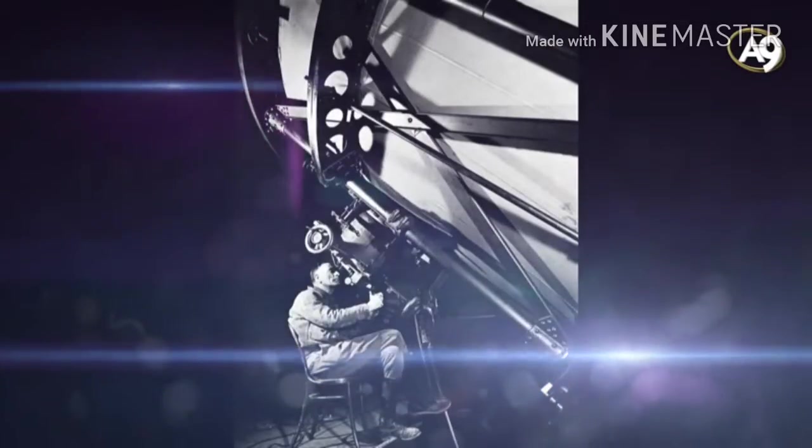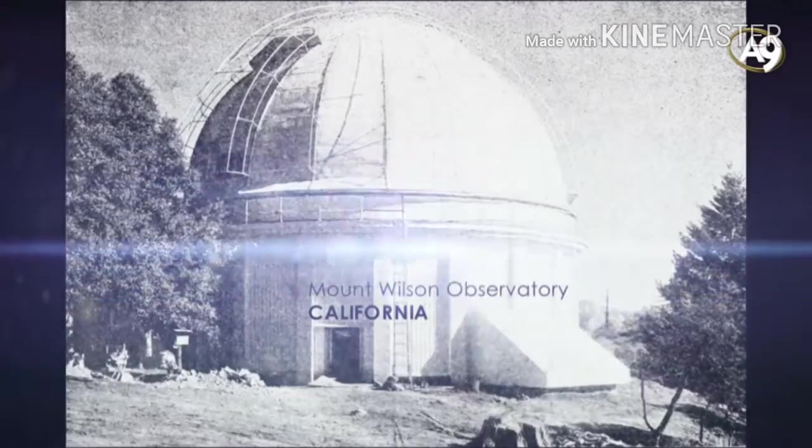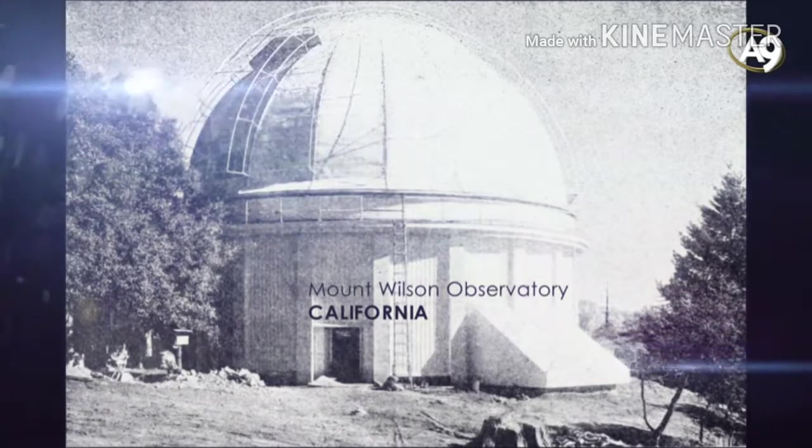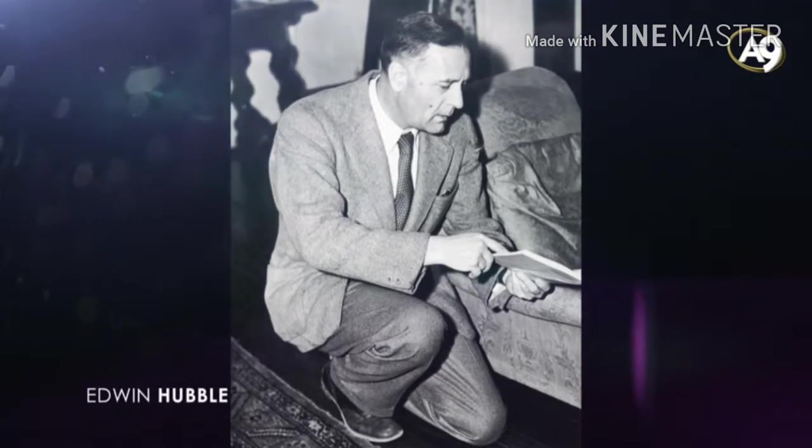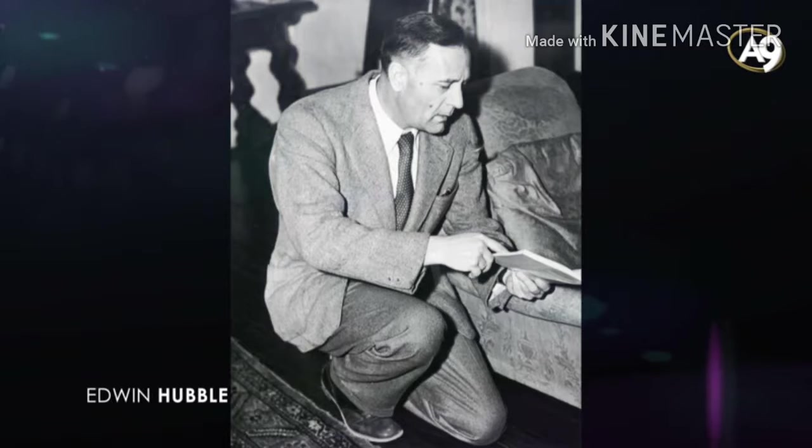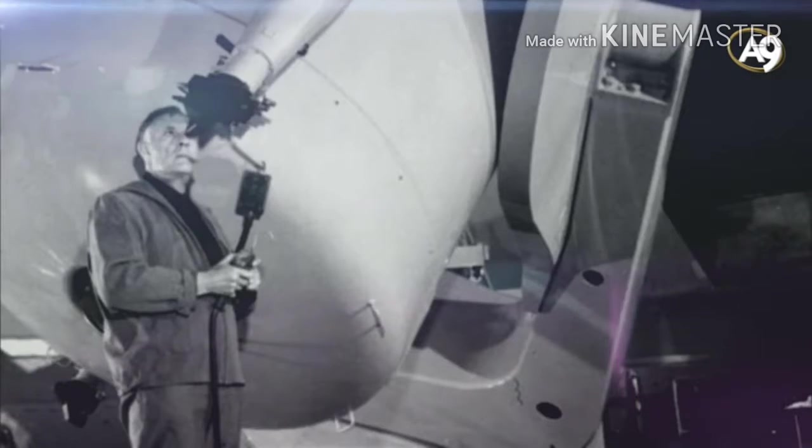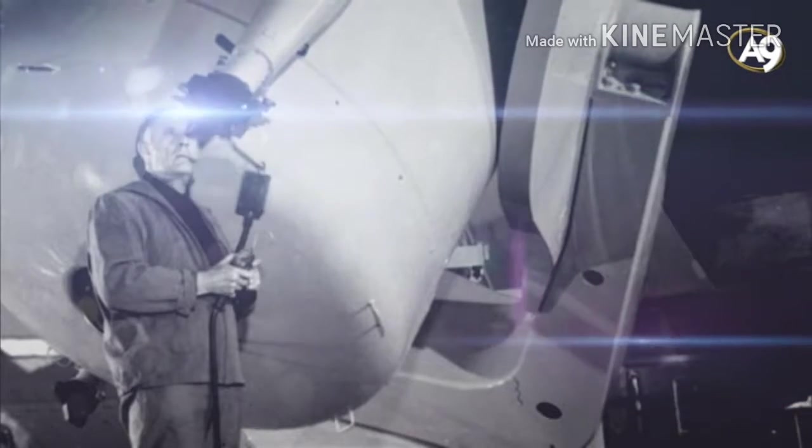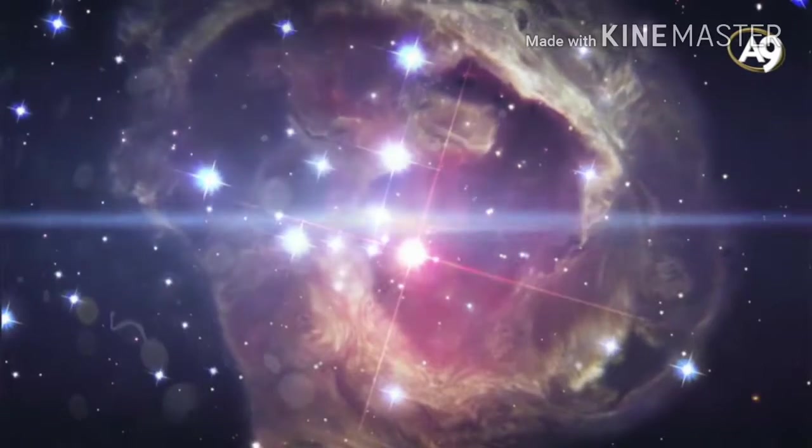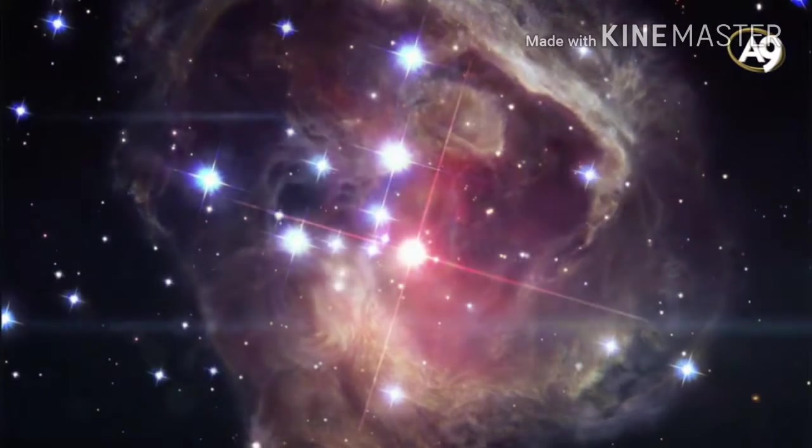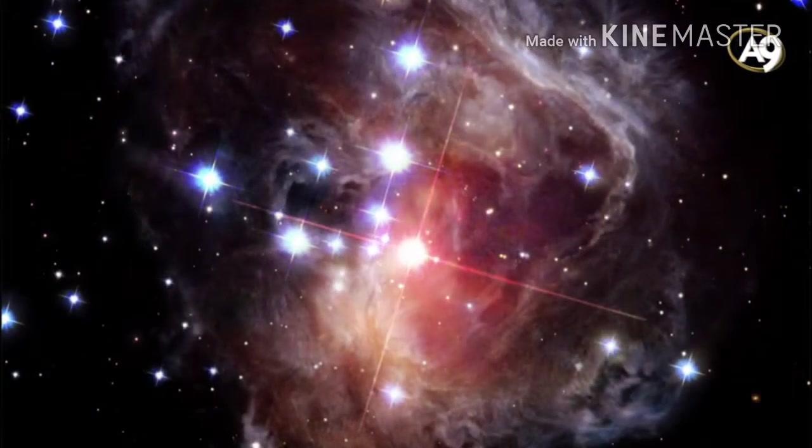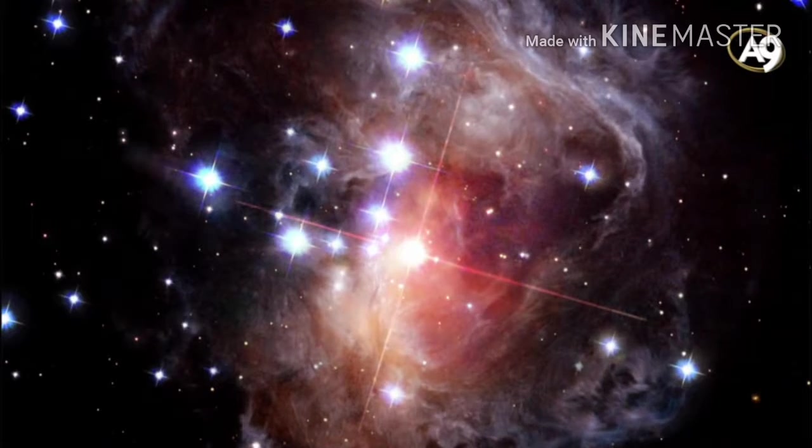In 1929, in California's Mount Wilson Observatory, an American astronomer by the name of Edwin Hubble made one of the greatest discoveries in the history of astronomy. While he observed the stars with a giant telescope, he found out that they emitted a reddish light depending on their distance. This meant that the stars were moving away from us.